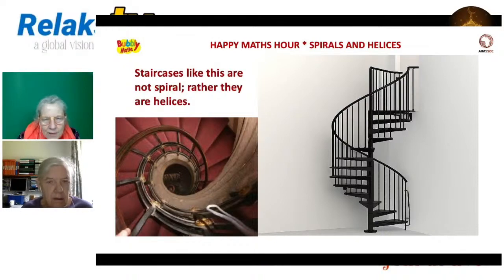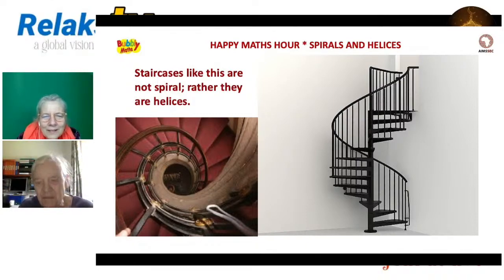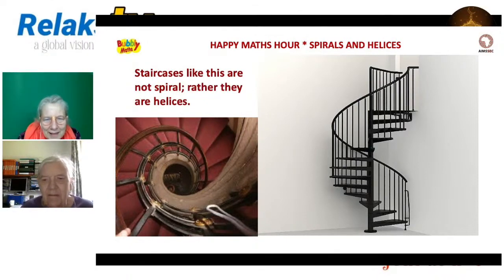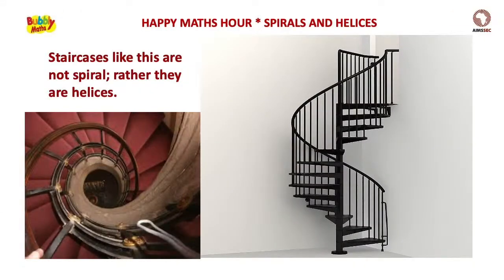The helix staircase on the right does that inverting optical illusion - it's hard to tell which way round the stairs face. The bottom lot appears to be behind the rail, but actually what's there is not what you see - it's what your brain makes of what you see.